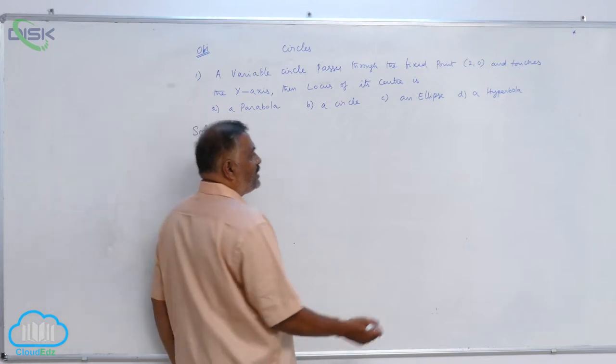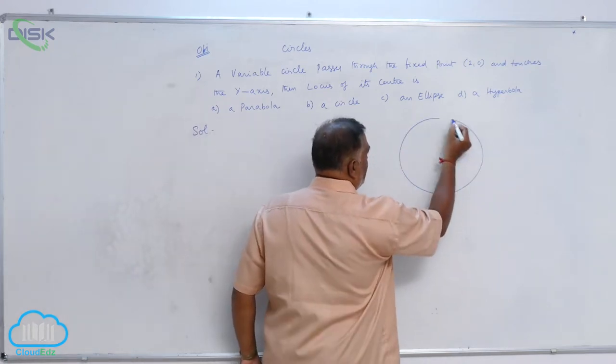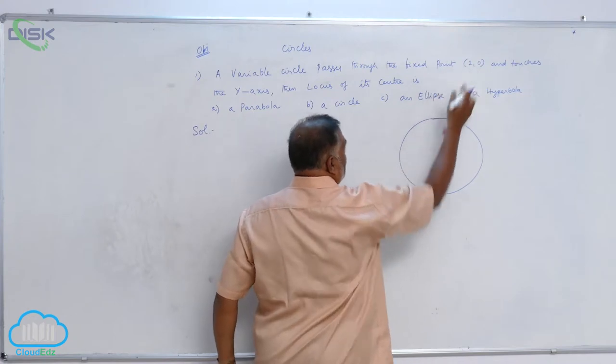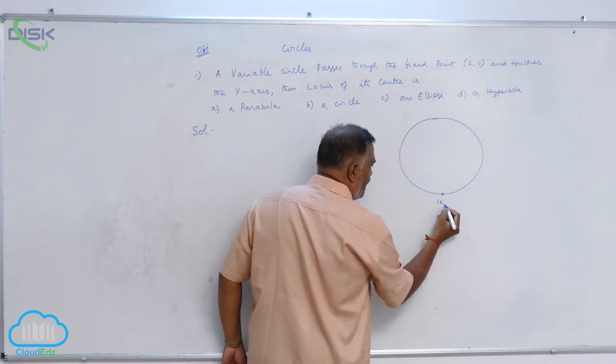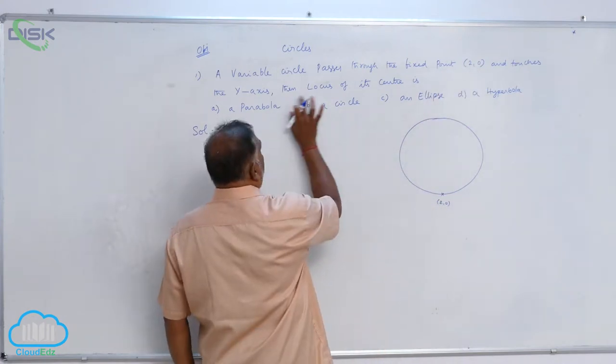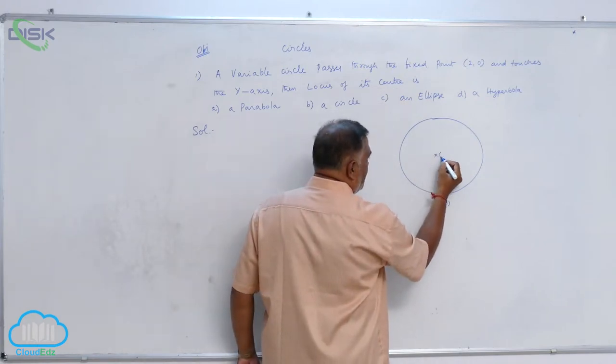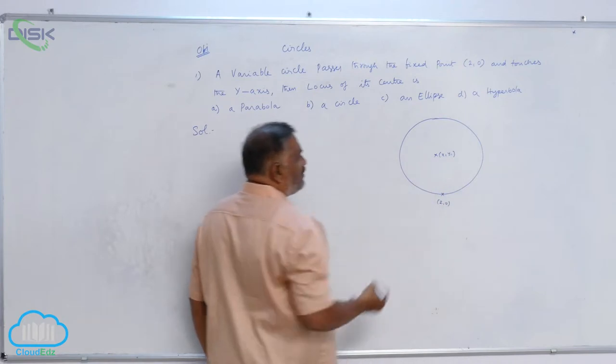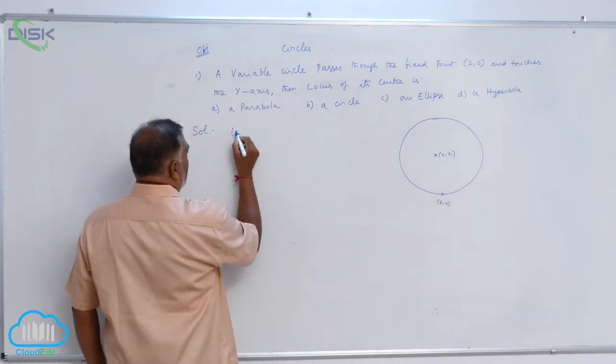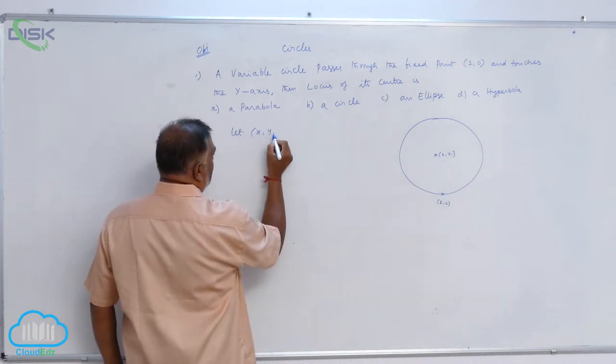Now let us draw a diagram. Here, circle passes through the point (2, 0). Since we require locus of the center of the circle, we assume that center may be (x1, y1). So let (x1, y1) be the center.